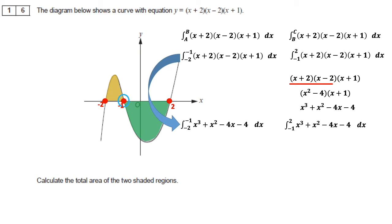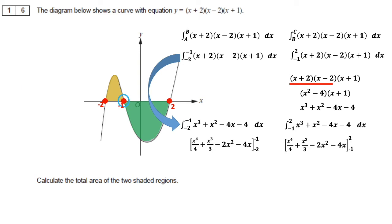Using the integration rule of increasing the power by 1 then dividing by that power, the integral of the curve is x to the 4 over 4, minus x cubed over 3, then minus 4x squared over 2 which simplifies to minus 2x squared, and finally minus 4x. We apply the limits minus 1 and minus 2 for the first integral, and 2 and minus 1 for the second.